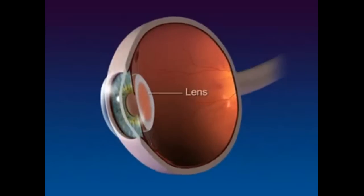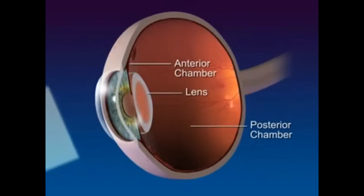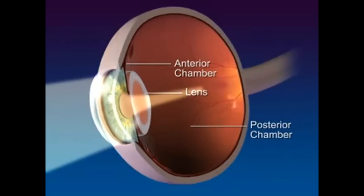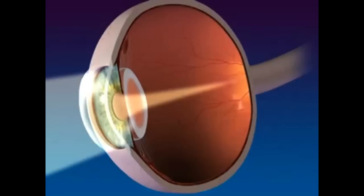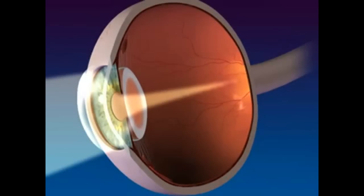The lens is located behind the pupil and between the anterior and posterior chambers. The lens is a transparent, flexible, biconvex structure that bends or refracts light rays so they focus on the nerve cells of the retina.